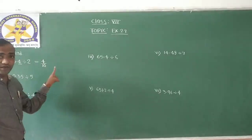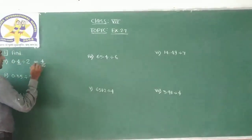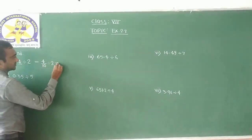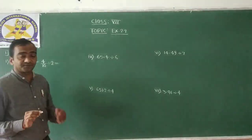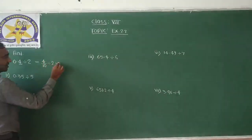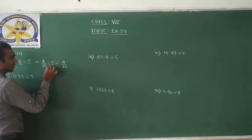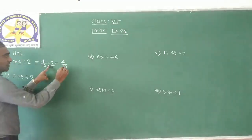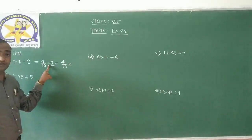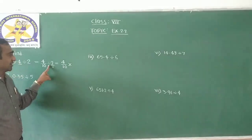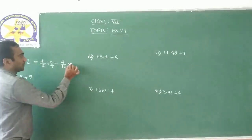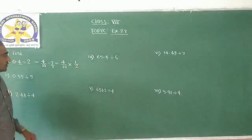So 0.4 can be written as 4 by 10, divided by 2. Now this step is very important. You can simplify: 4 by 10, and convert 2 into 2 by 1. Now convert this division into a multiplication — when you convert division to multiplication, you take the reciprocal of the next fraction. The reciprocal of 2 by 1 is 1 by 2.